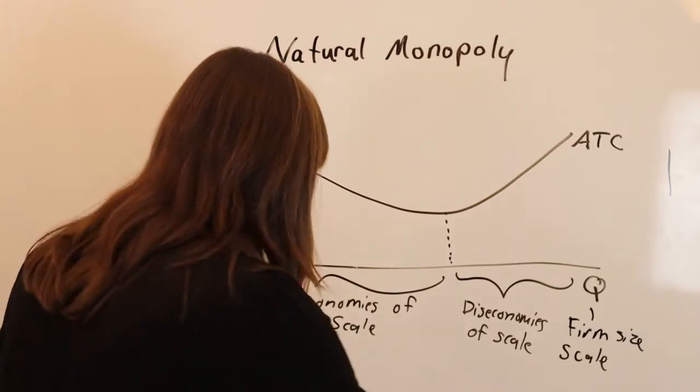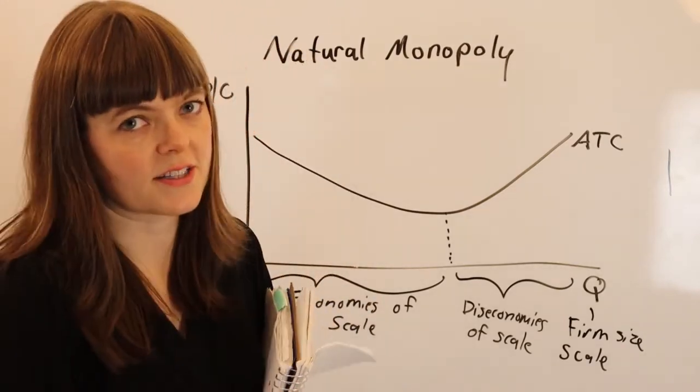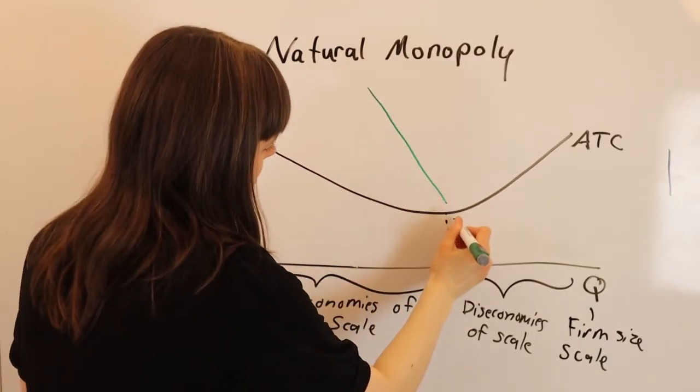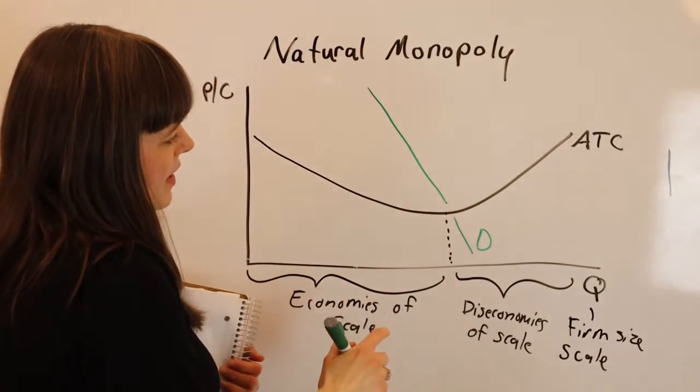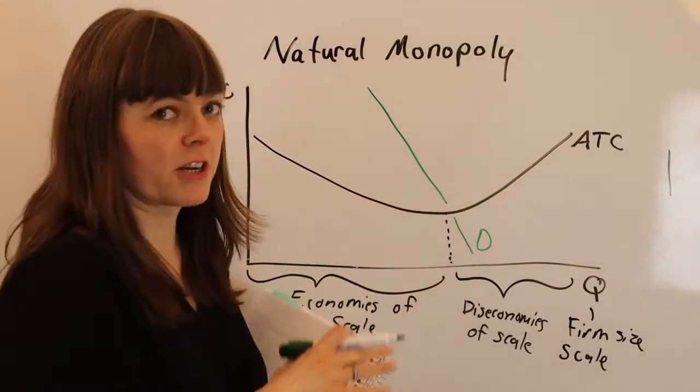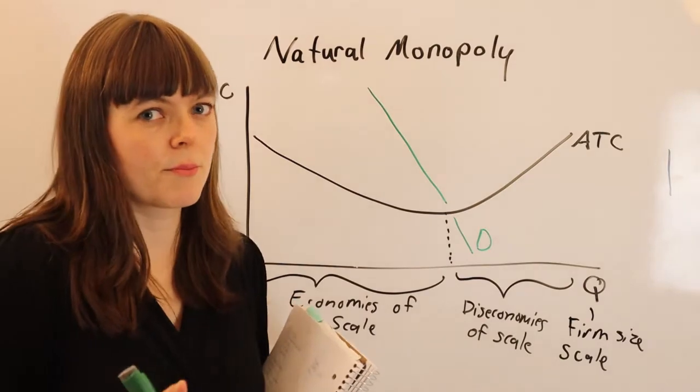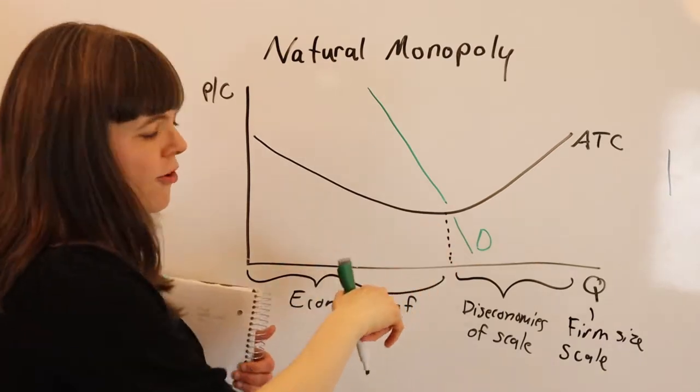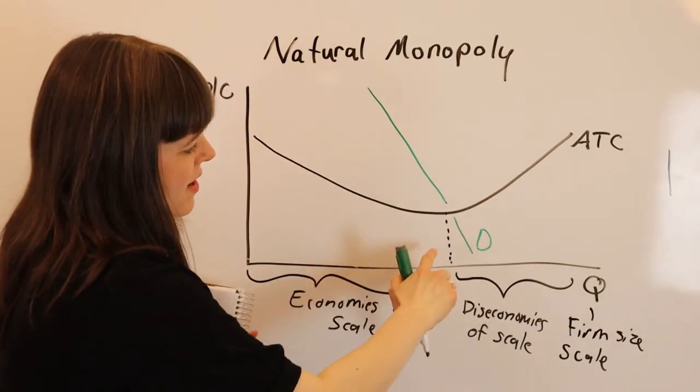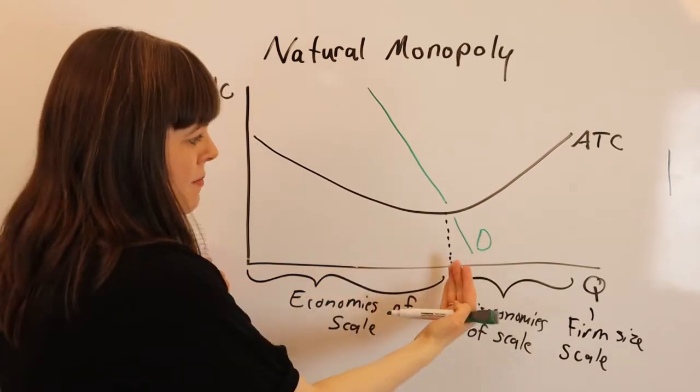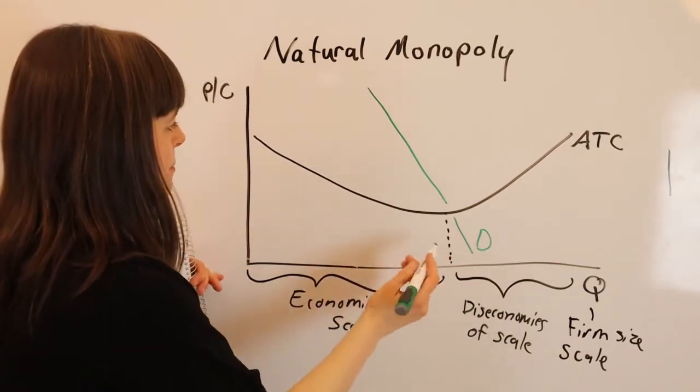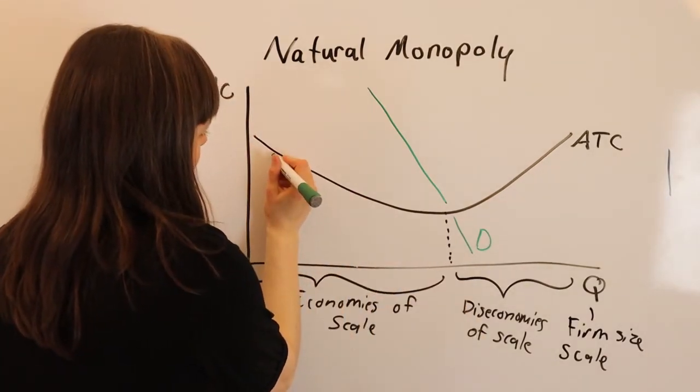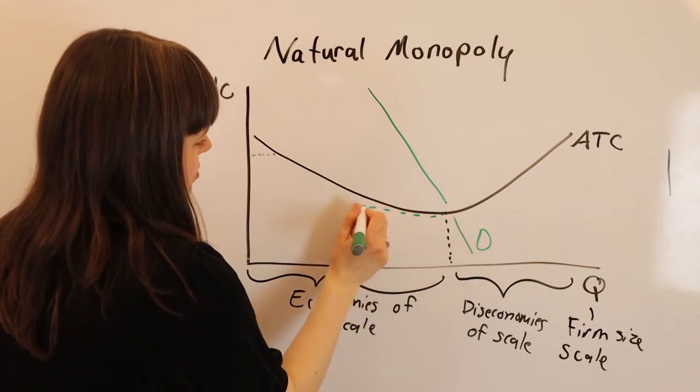Now you might imagine if you're thinking about the demand for a particular product in an industry, if the demand curve is coming through here and looks something like this, then this industry is actually most efficient if one firm produces all of their goods, because that one firm can produce them most efficiently. So if another firm tried to enter, let's imagine that there's this one firm that's meeting all the demand at the industry. And this firm is really big. And a competitor came in and tried to compete. That competitor just can't produce as cheaply as the really big firm.